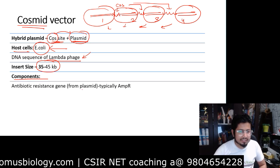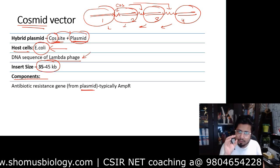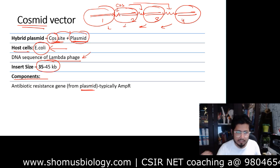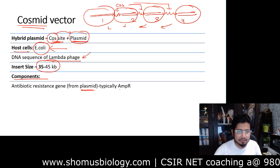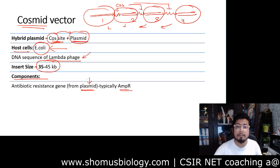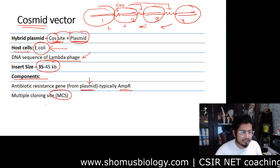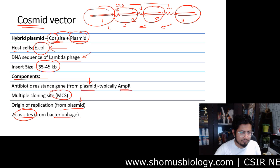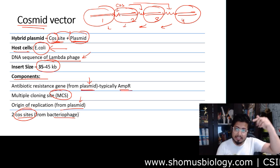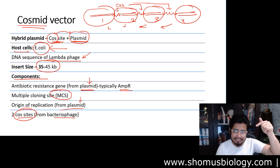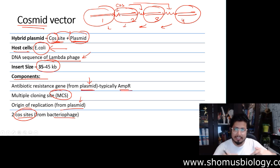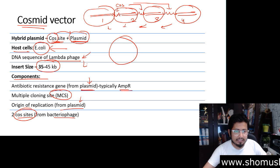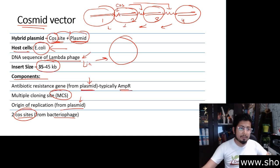The components of Cosmid are taken either from the plasmid or from the bacteriophage. The antibiotic resistance gene — typically the ampicillin resistance gene — is taken from the plasmid. The multiple cloning site and the origin of replication are also taken from the plasmid. Two cos sites are taken from the bacteriophage. The two cos sites are required in the 5' direction on both strands in the opposite orientation, so that they can contact each other, form hydrogen bonds, self-ligate, and convert the linear DNA into a circular DNA.